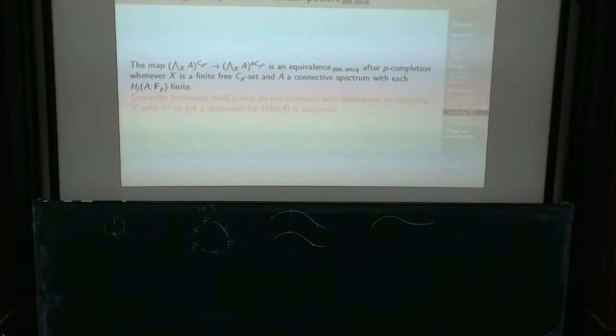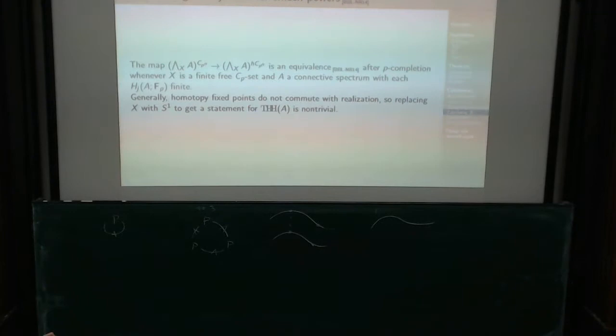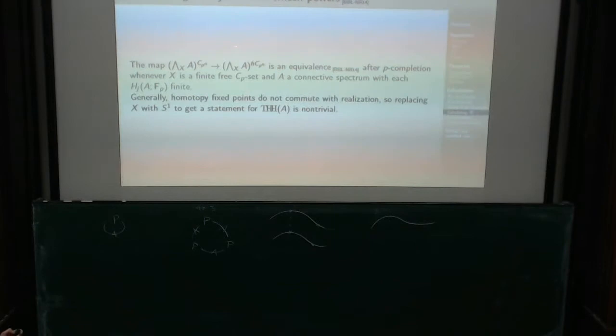You have the simplicial circle, and they're doing it in each degree — in each degree it's fine — but homotopy fixed points do not commute with taking the realization. So this does unfortunately not imply that this is always an equivalence, and that's probably good that they didn't prove that. But this is a result to be aware of in this situation. Homotopy fixed points and fixed points are occasionally very close. For A being the sphere spectrum, this is the original Segal conjecture.